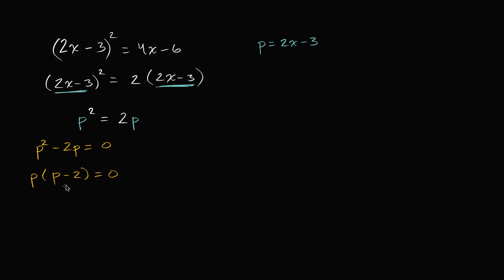And we've seen this show multiple times. If I have the product of two things and they're equal to zero, at least one of them needs to be equal to zero. So either p is equal to zero or p minus 2 is equal to zero. Well, if p minus 2 is equal to zero, then that means p is equal to 2. So either p equals zero or p equals 2.